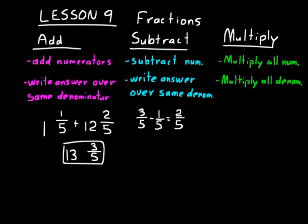Multiplication has a different process. You multiply all of the numerators and then multiply all of the denominators together and write your result. For example, one-half times one-half times three-sevenths: multiply all numerators — one times one times three equals three. Multiply all denominators — two times two times seven is twenty-eight. The answer is three over twenty-eight.